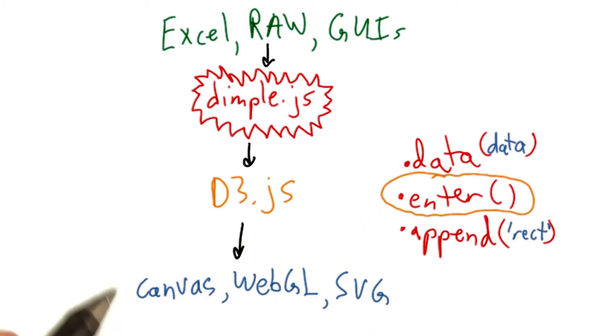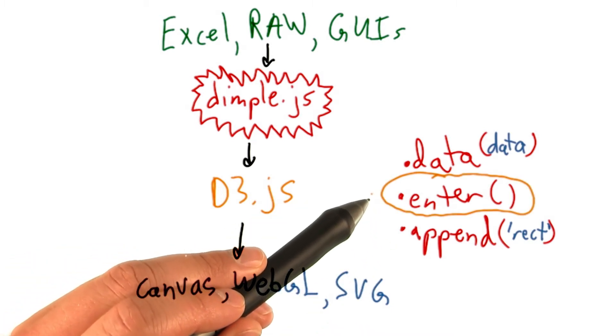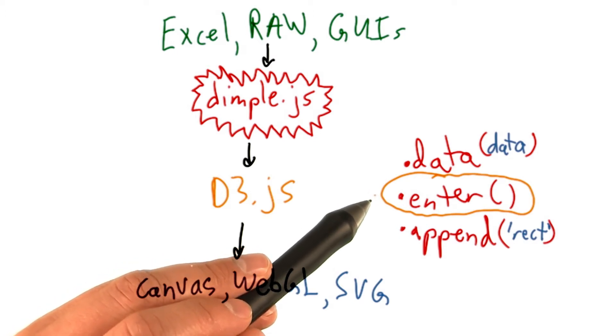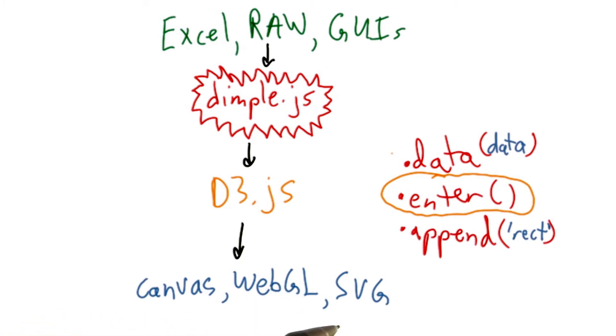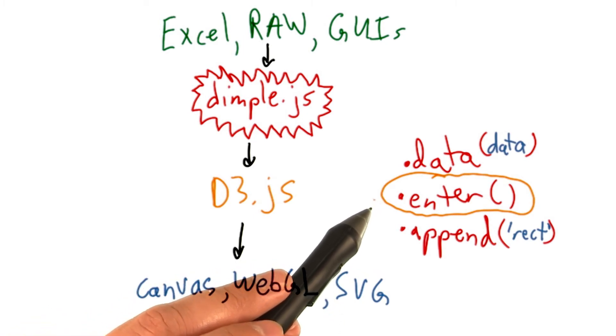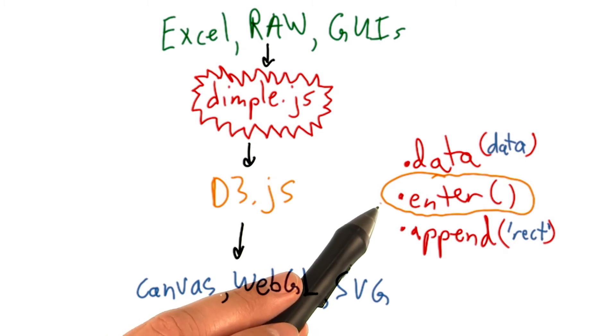most often due to the .enter and .exit commands that you can call on your data. These are only really relevant if you're adding and removing elements on a given web page in an animation, transition, or interaction.